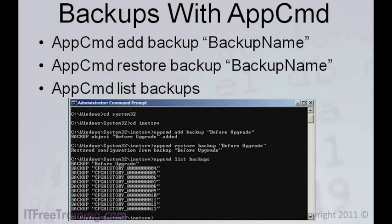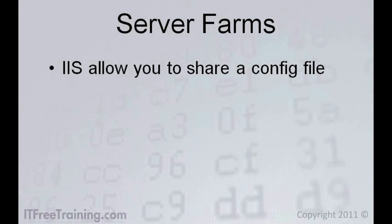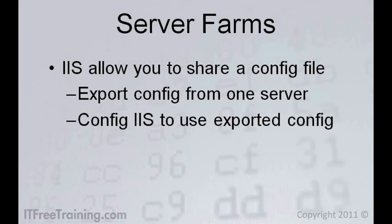This backup system only backs up the configuration file to your local server — it does not replace a tape backup or other backup system. If you are running IIS in a server farm, you will have servers that need to run the same configuration. In the past, you would need to make changes to all the servers. Even with improved administration and scripting options in IIS 7, it is possible in a large server farm to miss a server or two when making changes. IIS 7 allows you to share a configuration file with all servers in your server farm, guaranteeing that when you make a change, all servers will have that change. To do this, first set up your IIS server and export the configuration file, then set up IIS to use the exported configuration file.